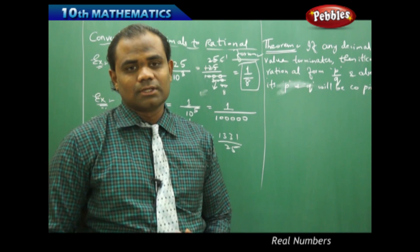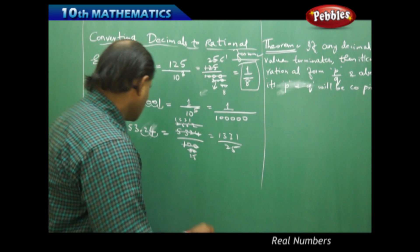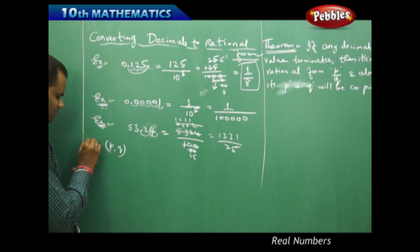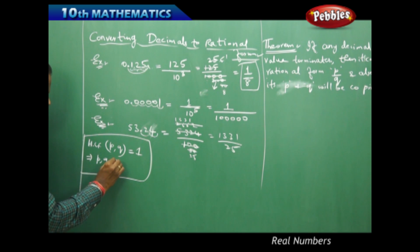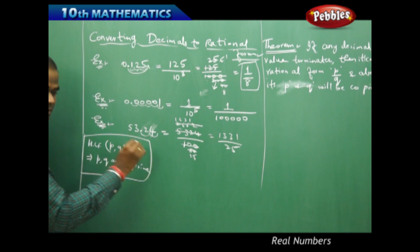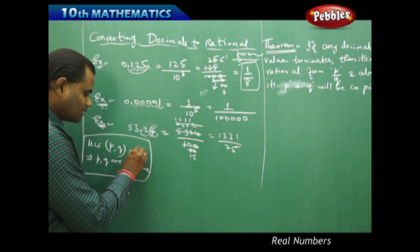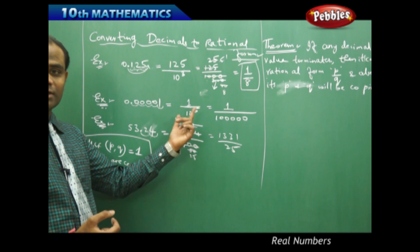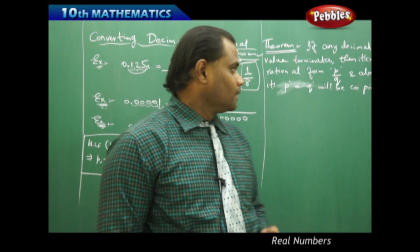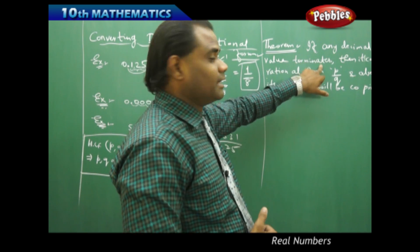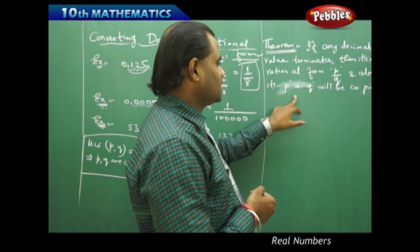Co-primes are values where the GCD of the two numbers is 1. When do I say two numbers are co-prime? If the GCD or HCF of those two numbers is 1, then the two numbers are co-prime. So when I want to test if two numbers are co-primes, I find the HCF of those two numbers, and if the HCF is 1, then the two numbers are said to be co-primes to each other. So: if any decimal value terminates, it can be expressed in rational form p by q where p and q are co-primes.